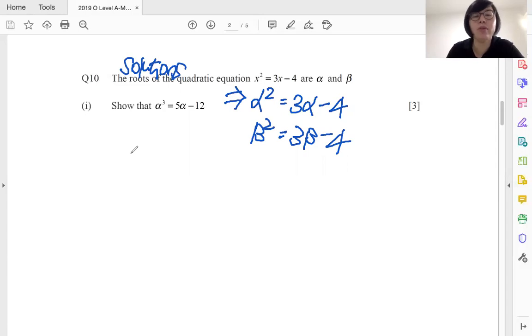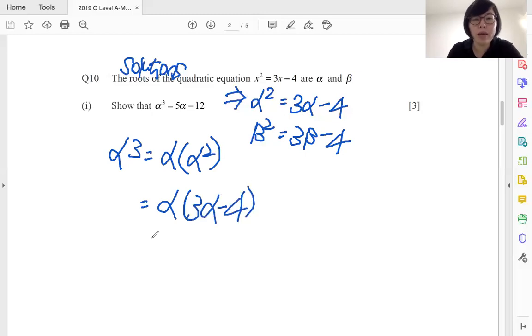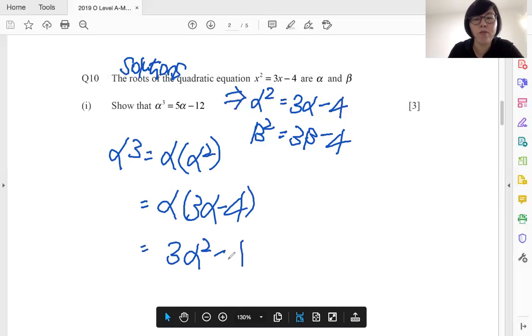Let's take a look at what the answer is to show alpha cube. First thing you got to think, alpha cube, how can we get alpha cube? Well, alpha cube can be rewritten as alpha multiplied with alpha square, and we know what is alpha square because I've just put it here, which is 3 alpha minus 4. So expand, so we have 3 alpha square minus 4 alpha.